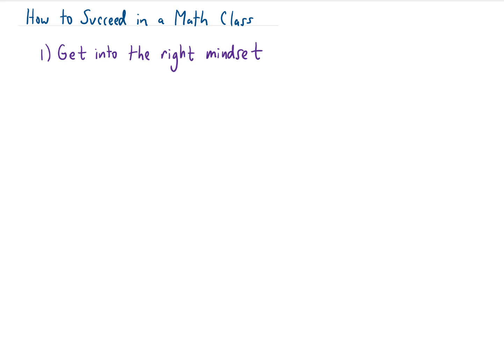The first part of that mindset is recognizing that math is not a special skill that some people just get and other people just don't. Math is a skill like any other. Anybody can improve at math.